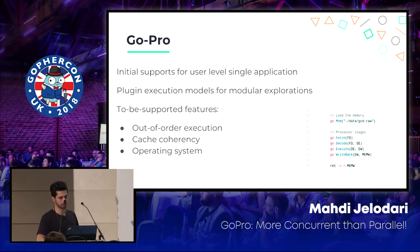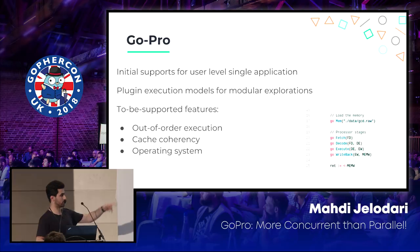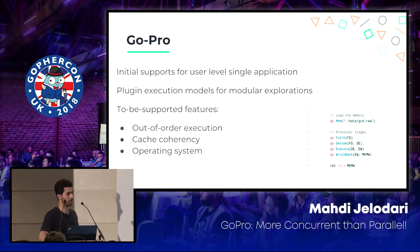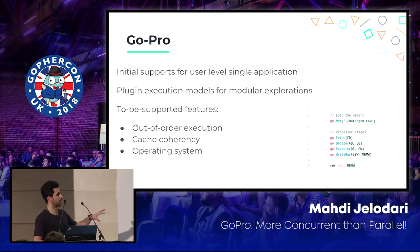In this model, every processor has single-order processes. There are out-of-order execution models, of course. Cache coherency or support for operating systems — these are not in this implementation. Features like modeling interrupts are not supported at this point, but this is an early-stage project that we're still working on.